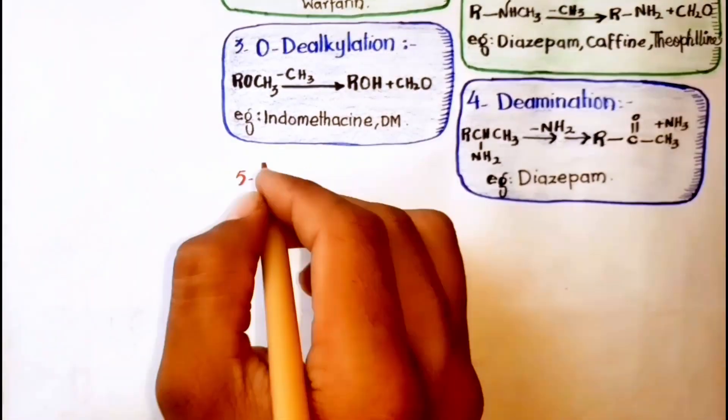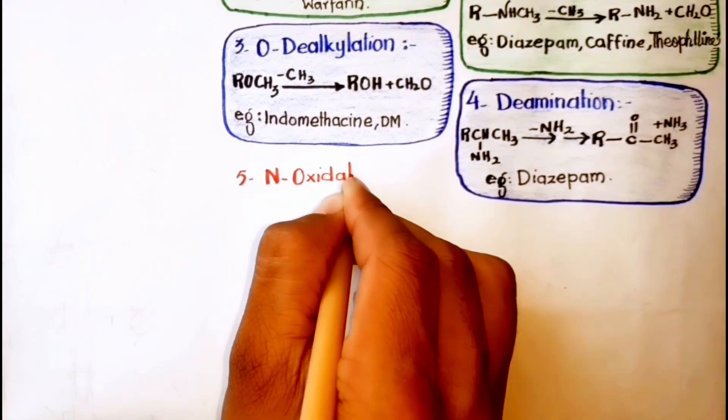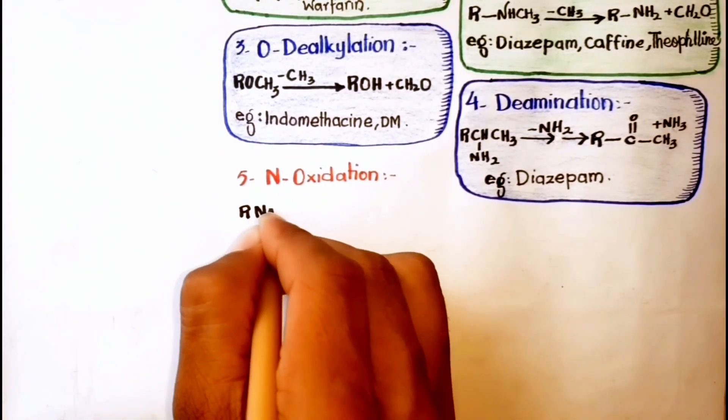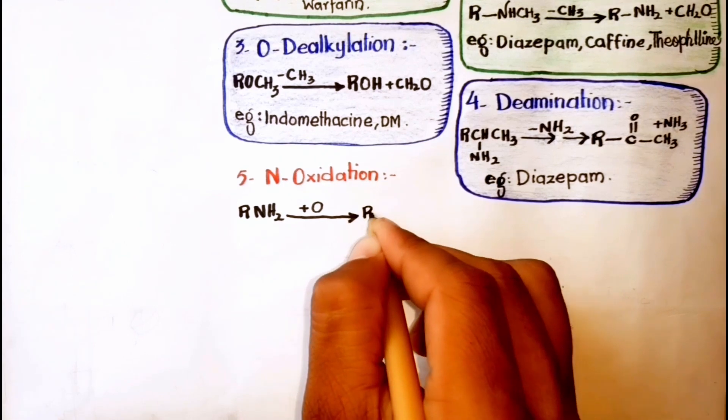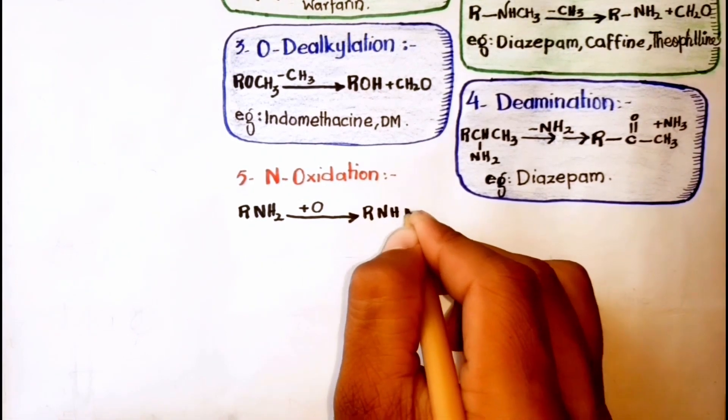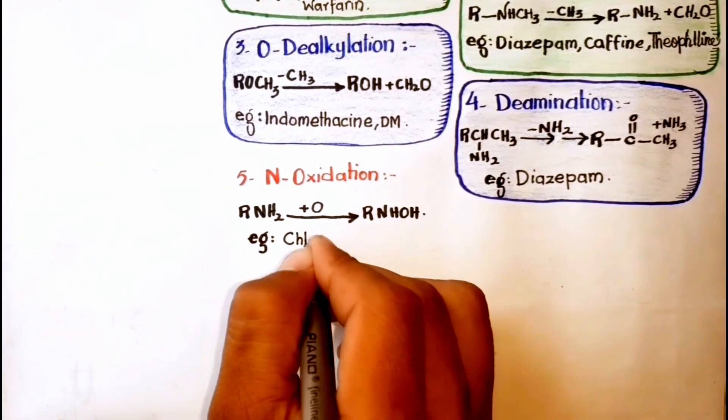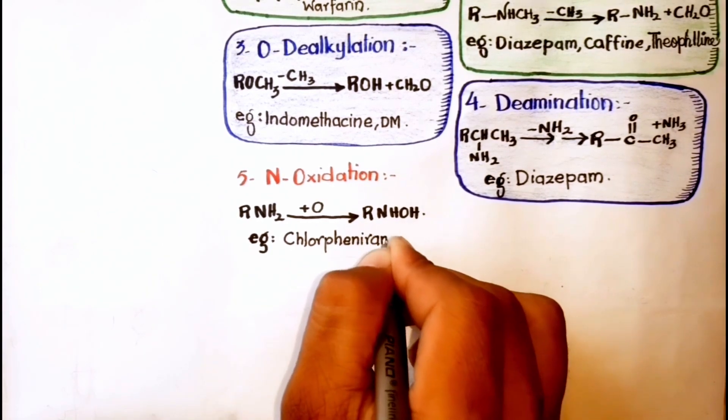Next is N-oxidation. N-oxidation reactions are oxidation reactions involving the nitrogen atom of the drug molecule. For example, chlorpheniramine.